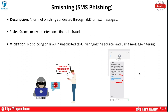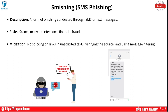Mitigation for smishing includes not clicking on any unsolicited text messages — if you're not expecting a message, don't click any link in it. Verify the source. There are message filtering apps available, but again the number one mitigation for social engineering is education. Technical defenses can't always work — you can't monitor every message — and over-filtering can block legitimate messages for salespeople who communicate with contacts from across the country.